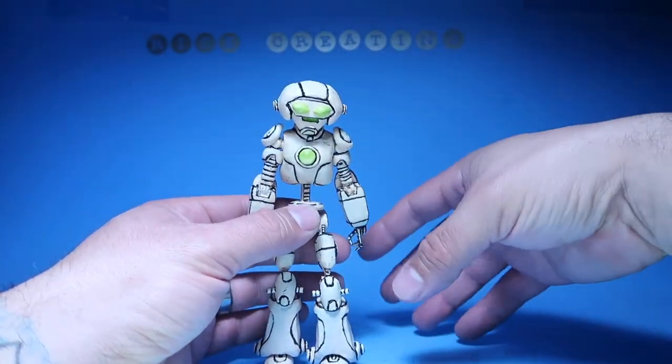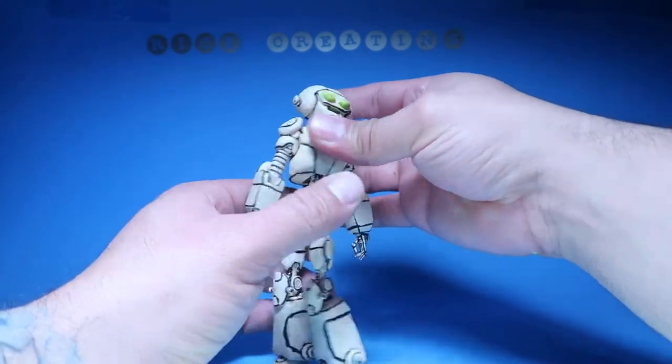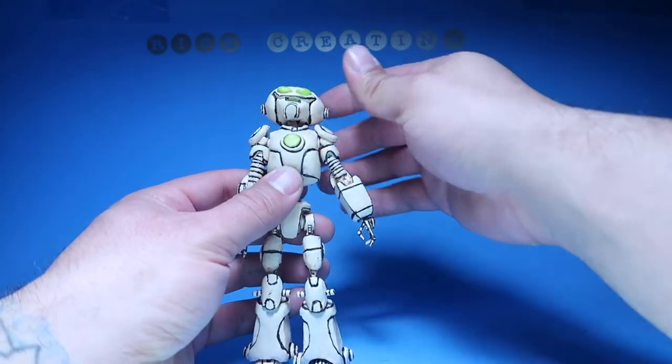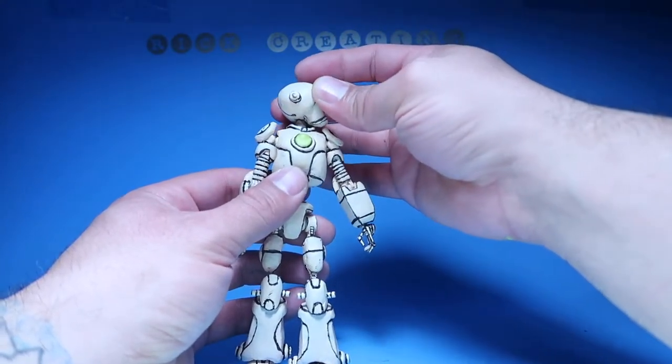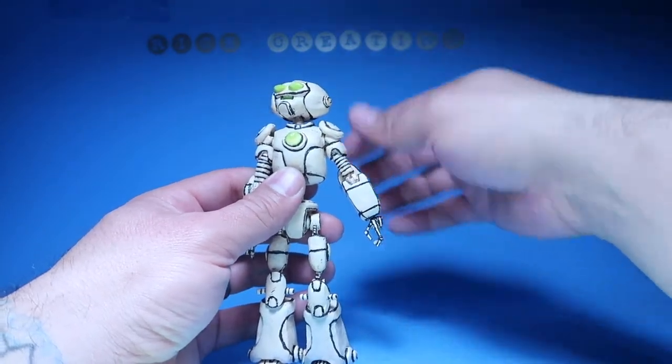Anyways, as far as articulation, he could bend down that much, he could bend back that much, he could rotate all the way around. He could look down that much, look up that much, look to the left, to the right, that much.